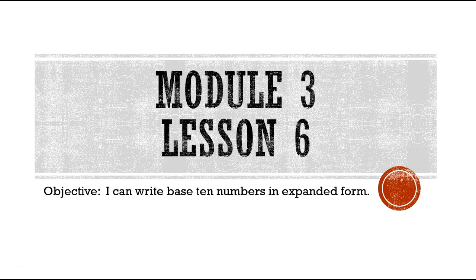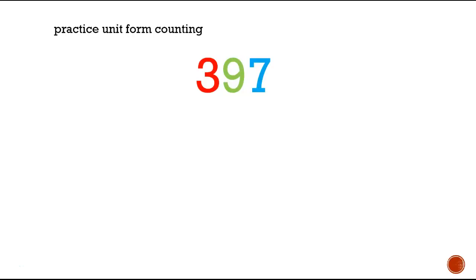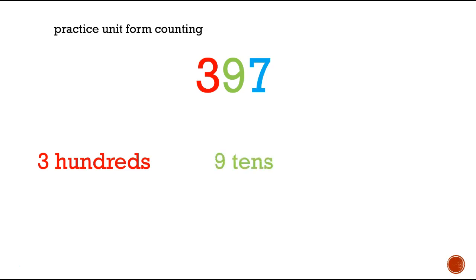So we're going to practice unit form counting. I have the number 397. If I'm going to write it out, I'm going to write it as 3 hundreds, 9 tens, 7 ones.